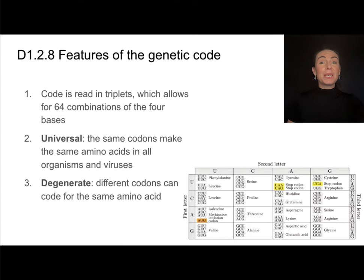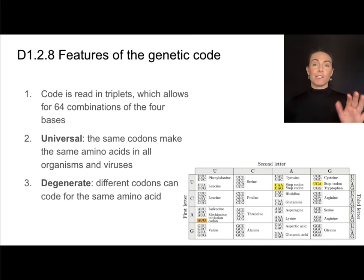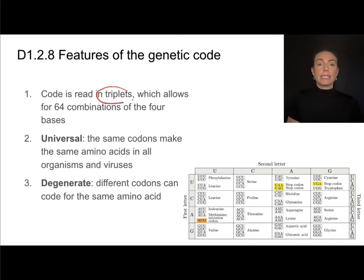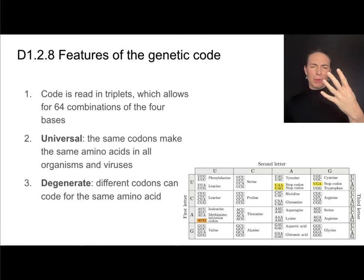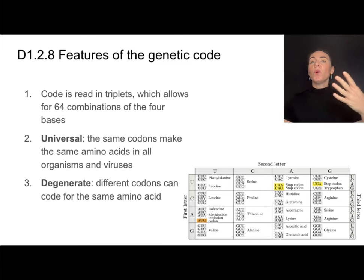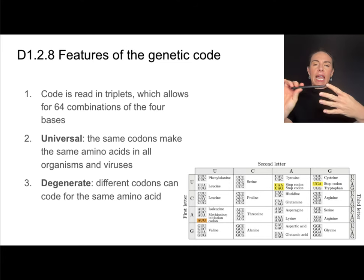There are some really cool features of the genetic code. First, the genetic code is read in triplets — groups of three. There are only four possible bases in DNA: A, T, G, and C. Or in RNA: A, U, G, and C. If we read these one at a time, that would only give four combinations — not very much variety. But when you read things in groups of three with four possible bases, that means there are 64 different combinations. That gives a lot more variety and many more opportunities to produce unique amino acid sequences.